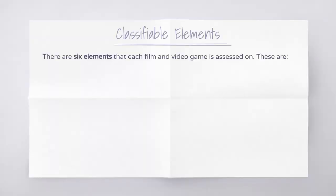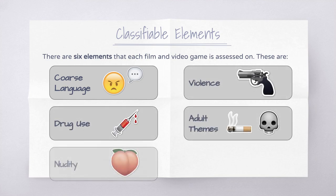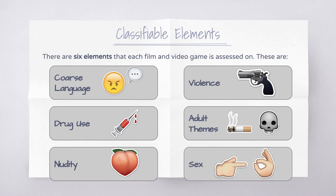When classifying films or video games, there are six elements that the content is assessed on: coarse language, violence, drug use, adult themes, nudity, and sex. On each of those six categories, a panel watches the film and rates whether each element has a high, low, or anywhere-in-between impact.